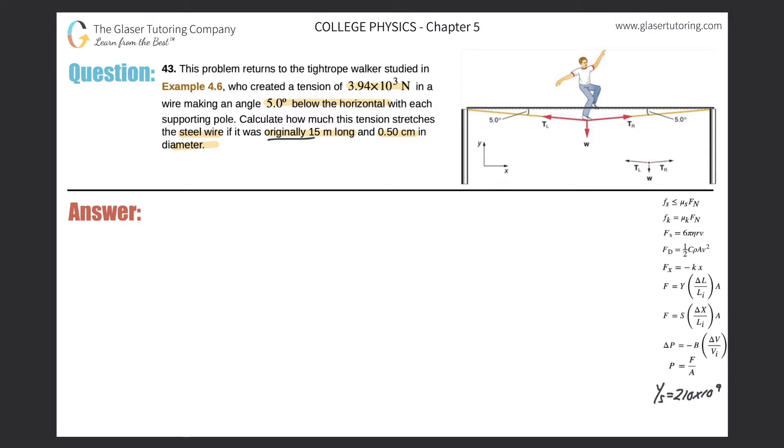To get the answer that the book wants you to have, they're basically assuming that this was originally 15 meters. So this was originally 15 meters and now we place the person on it. It's a little unreasonable but it is what it is.